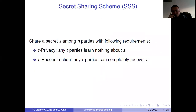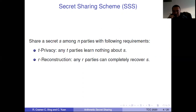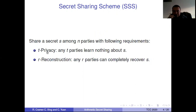So first, what is a secret sharing scheme? A secret sharing scheme is used to share a secret S among N parties with the following requirements. First, it has T-privacy, which means that any T parties learn nothing about the secret S. Also, R-reconstruction, which means any R parties can completely recover S. So a secret sharing scheme requires T-privacy and R-reconstruction.